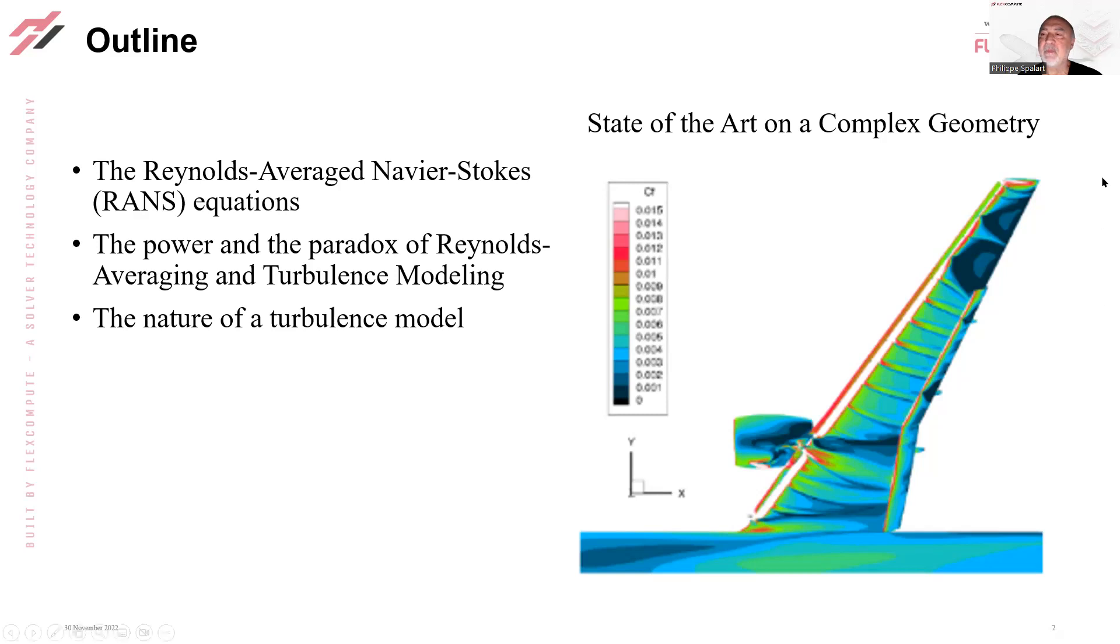On the right, you can see a picture of a solution we have with a conventional turbulence model over a high-lift wing. It shows the skin friction, and of much interest are the high red skin friction on the slats, and then the dark blue regions, which are very low skin friction. That's separation, and it has a lot of influence on the flow, the forces, the pitching moment, and all that.